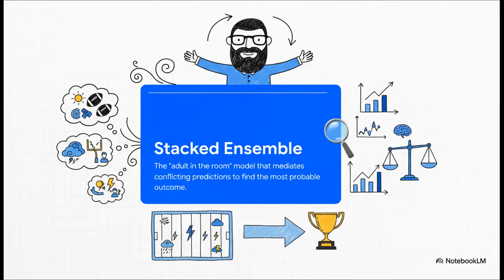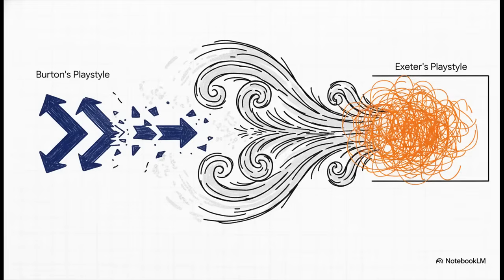So how in the world do you resolve this? Well, you bring in the adult in the room, the stacked ensemble model. Its entire job is to be the mediator. It listens to everyone's bickering, it analyzes their past performance and little biases, and then it makes the final, most rational call it can. In the ensemble's verdict? A slight edge to Exeter. Now why is that? It's because the weather itself becomes a tactical player in the game.